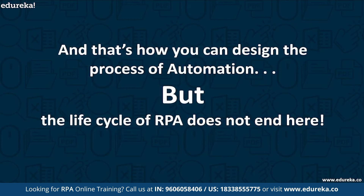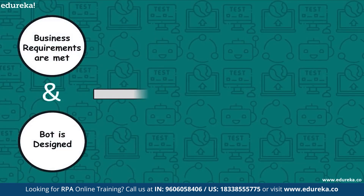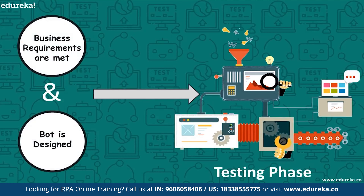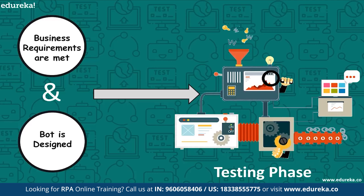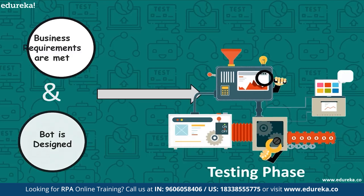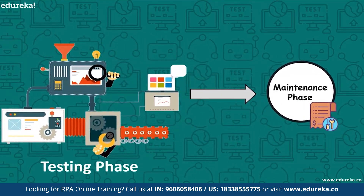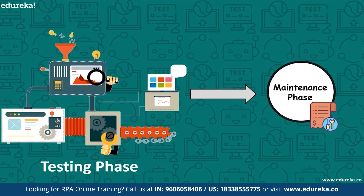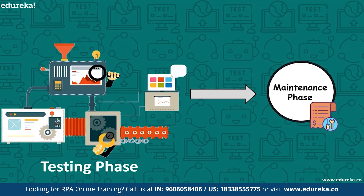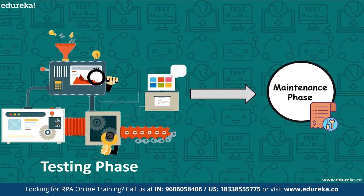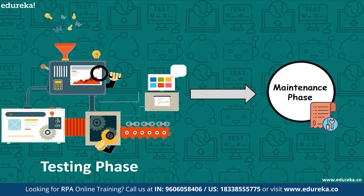But the lifecycle of RPA does not end there. Once business requirements are analyzed and a bot is developed to automate a specific task, the next step is running testing cycles to analyze quality and correct defects in the automation workflow. After the development and testing phases, the bot enters a maintenance phase that provides continuous support and helps in immediate defect resolution. This is how RPA works and how a single or complex process can be automated.